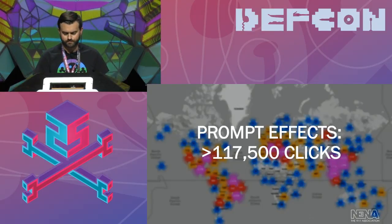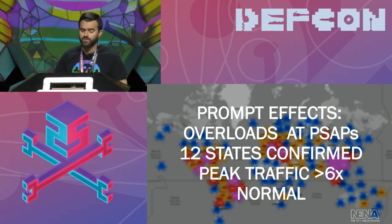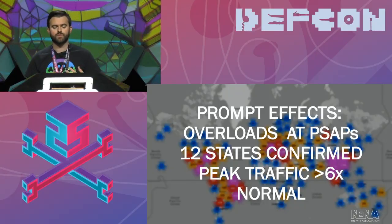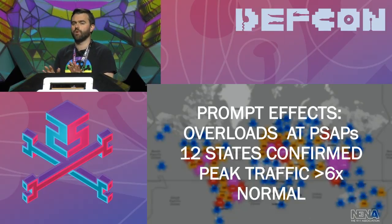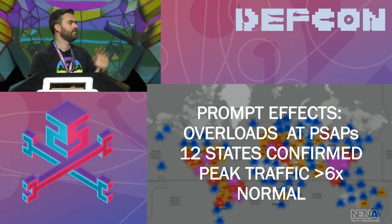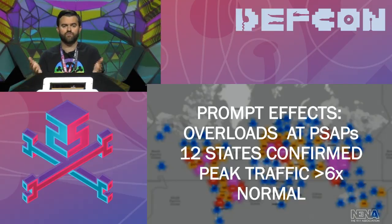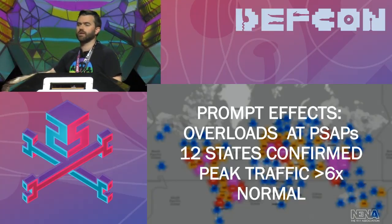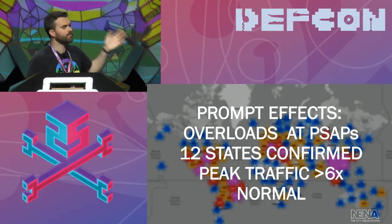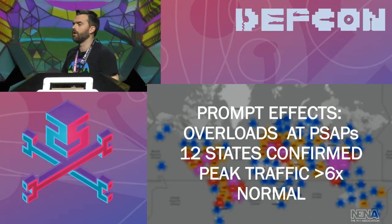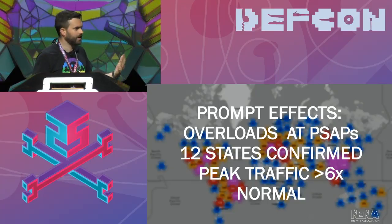But it did have real-world effects — it actually caused overloads at 9-1-1 centers in 12 states that we know about. In some places there was peak traffic of about six times their average load. Before everybody starts to freak out, I want to emphasize the average 9-1-1 center in the country has maybe three positions and maybe six to twelve trunks — it's very small. So six times three is just like, oh, you got 18 calls in an hour instead of three. The numbers can be made to seem a lot larger than they really are when you use multipliers like this.